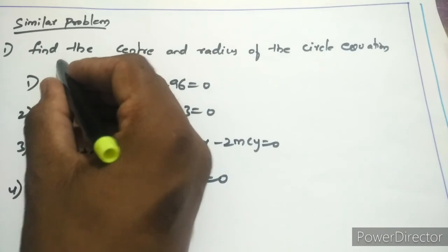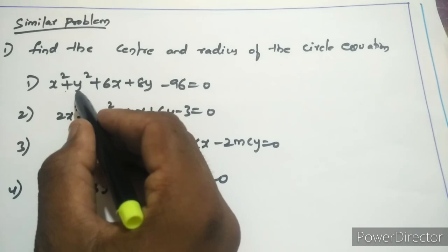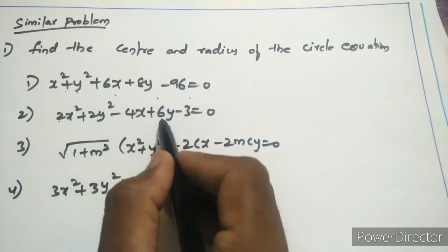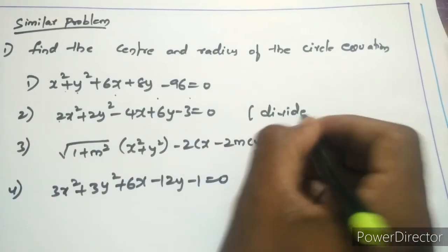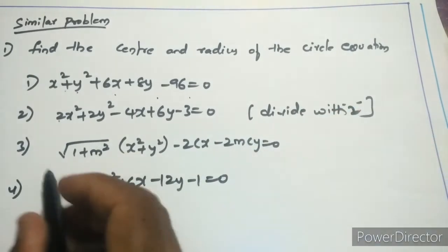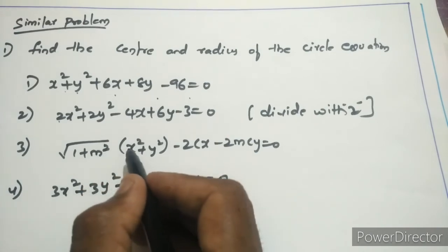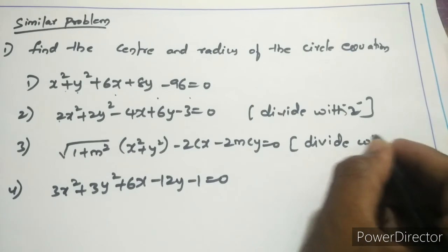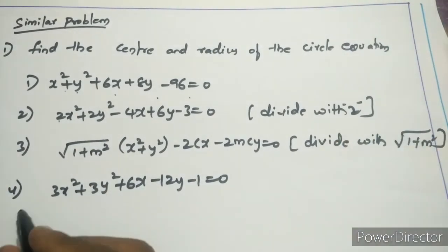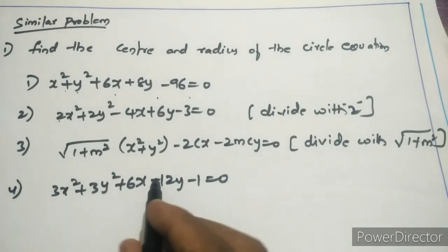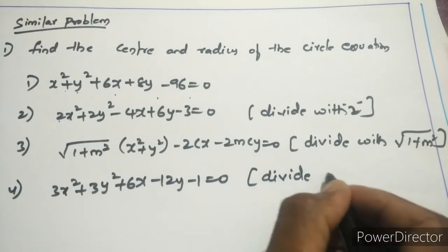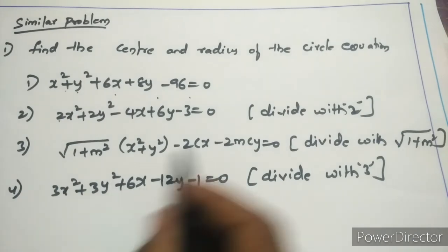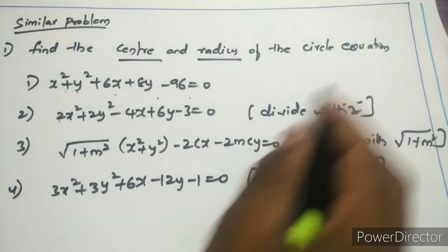These are similar practice problems: find the center and radius for (1) x² + y² + 6x + 8y - 96 = 0; (2) 2x² + 2y² - 4x + 6y - 3 = 0, divide by 2 first; (3) √(1 + m²)(x² + y²) - 2cx - 2mcy = 0; (4) 3x² + 3y² + 6x - 2y - 1 = 0, divide by 3 first. Find the center and radius for each.